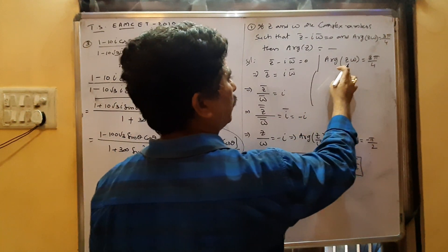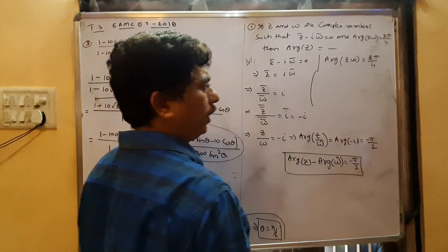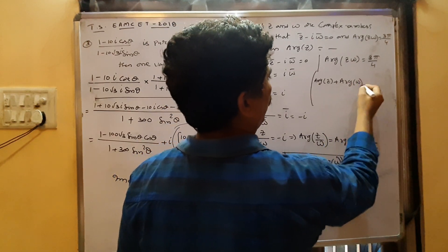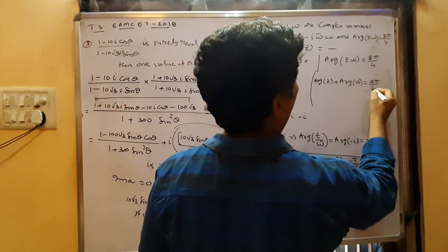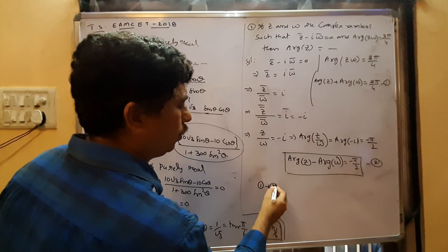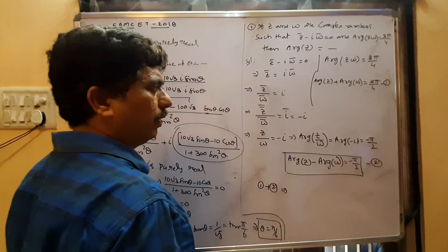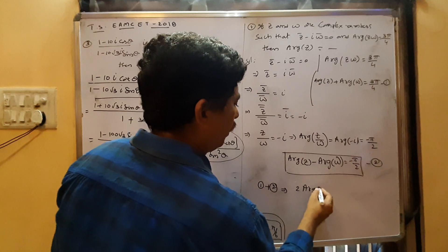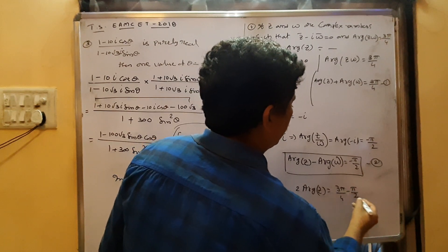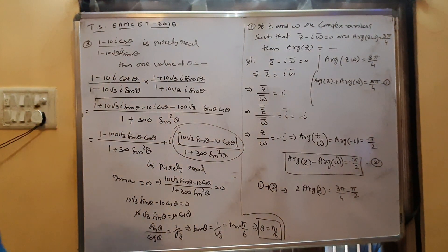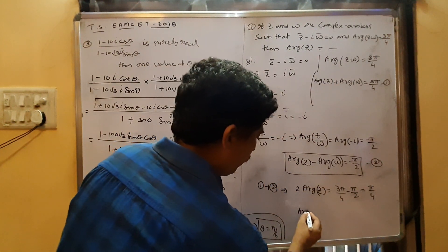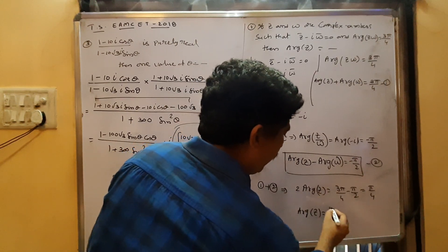Also, arg(Z·ω) = arg(Z) + arg(ω) = 3π/4 (equation 2). Adding equations 1 and 2: 2·arg(Z) = 3π/4 − π/2 = 3π/4 − 2π/4 = π/4. Therefore arg(Z) = π/8.